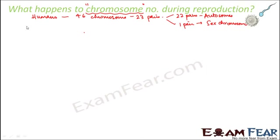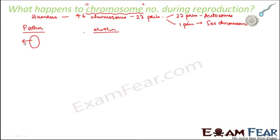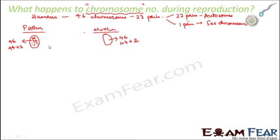For reproduction you need two human beings — one male and one female, the father and the mother. Inside each and every cell of the father's body there are 46 chromosomes, that is 44 autosomes plus 2 sex chromosomes. Similarly, inside the mother's body each and every cell has 46 chromosomes: 44 autosomes plus 2 sex chromosomes.